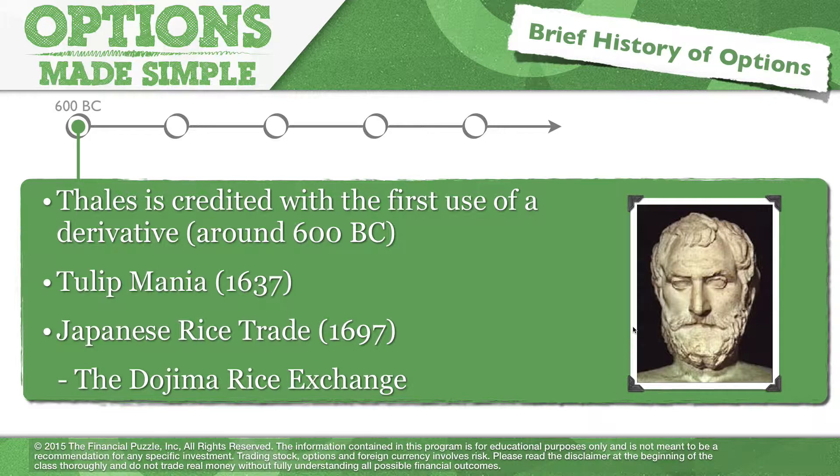Another example of derivative trading is Japanese rice trading — the Dojima Rice Exchange in Japan in the 1600s and 1700s. This was a major exchange where they were trading pieces of paper that today we would essentially call futures contracts based on the rice harvest. Futures and derivative trading in general has quite a bit of history.